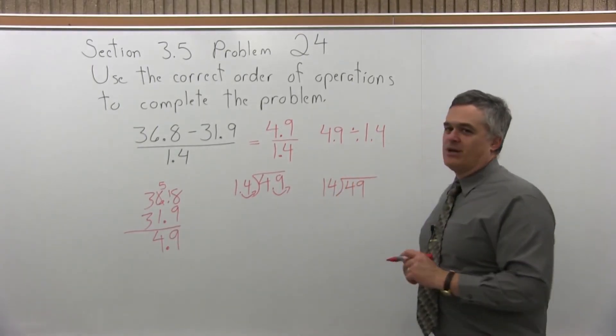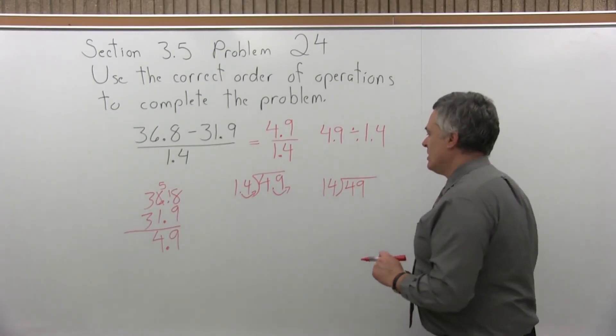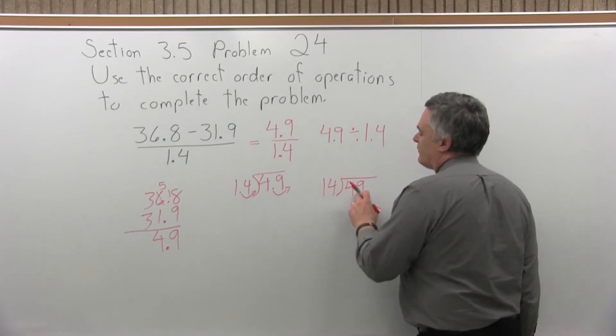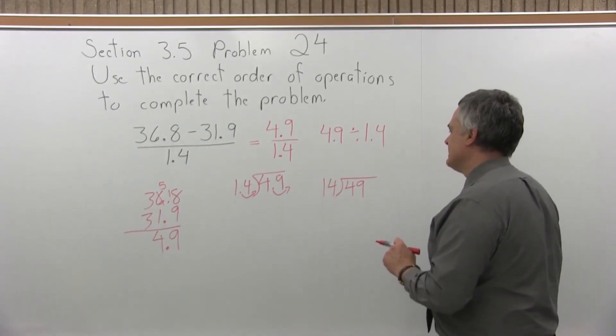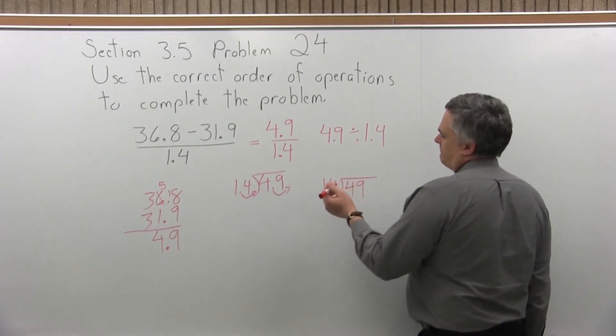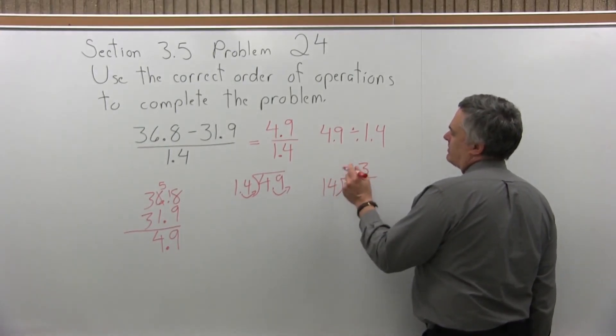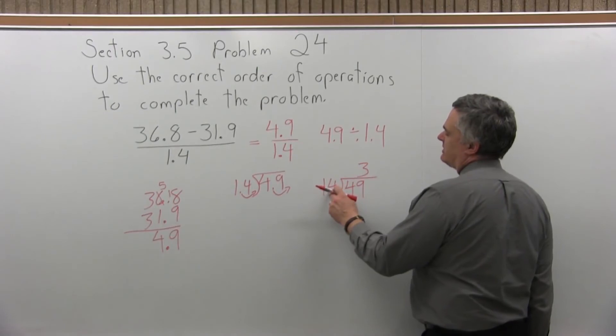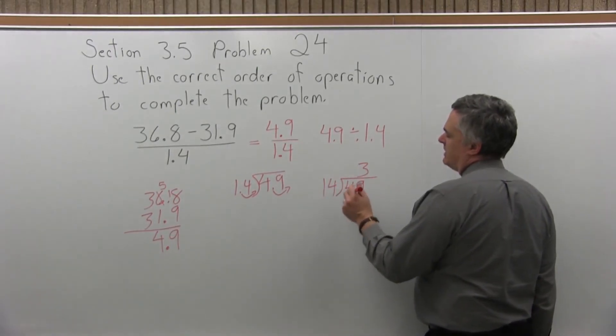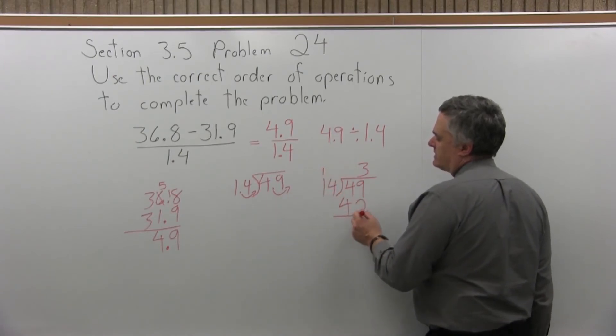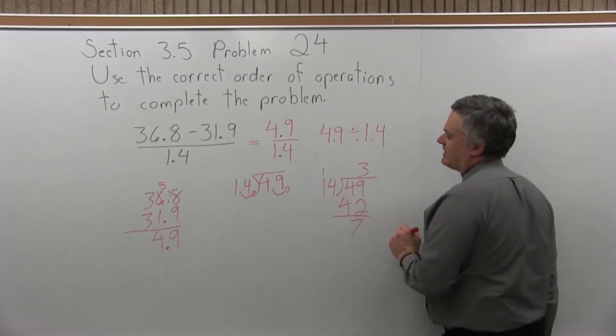Now I can go ahead and do that problem. So 14 divides into 4, it won't go, 4 is not big enough. 14 into 49, 3 will get me pretty close. So let's do 3 times 4 is 12, write the 2 carry the 1, 3 times 1 is 3, 3 plus 1 more is 4. So that is pretty close. So 49 minus 42 is 7.